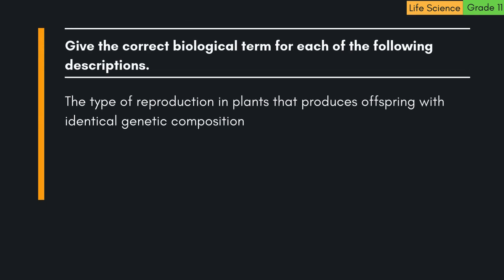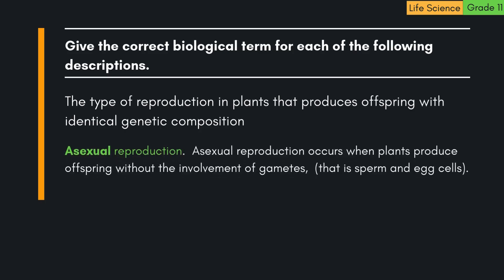The type of reproduction in plants that produces offspring with identical genetic composition is asexual reproduction. Asexual reproduction occurs when plants produce offspring without the involvement of gametes — that is, sperm and egg cells.